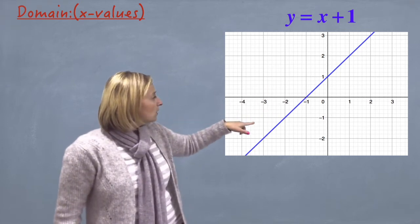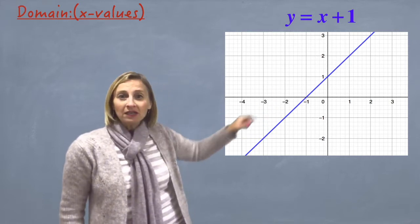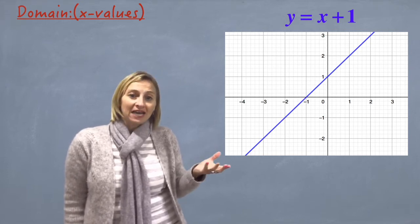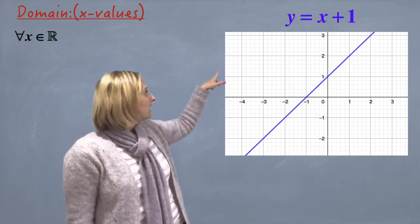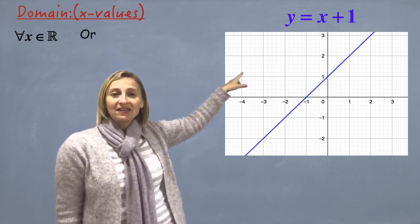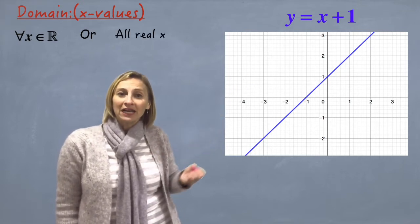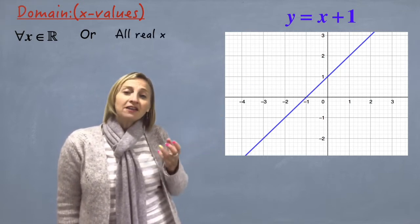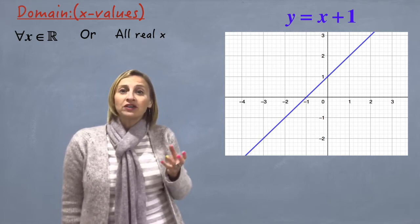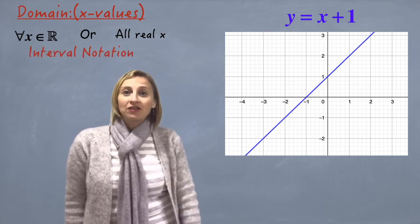Take a look at your diagram. Can x be 0? Yes. Can x be 2? Yes. X can be anything. That means it's all real x, and you can write that as: the upside-down 'a' means 'for all', x is an element of the real numbers — or you can just write 'all real x'. Now there are different ways that we can write the domain and the range, and you have to know the different ways to express them.